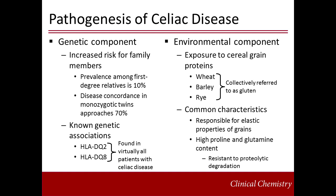For Celiac disease to develop, the proper environmental exposure must occur in an individual with genetic susceptibility. The genetic component of Celiac disease has been inferred from observations that the disease occurred in families, with family members of individuals with a confirmed diagnosis being at greater risk. Ultimately, specific alleles of the human leukocyte antigen, or HLA complex, were demonstrated to be responsible for much of the genetic susceptibility.